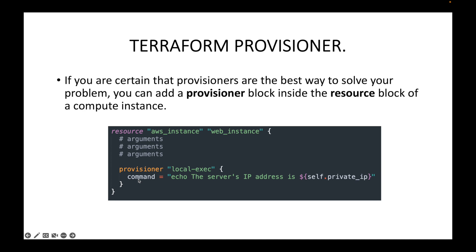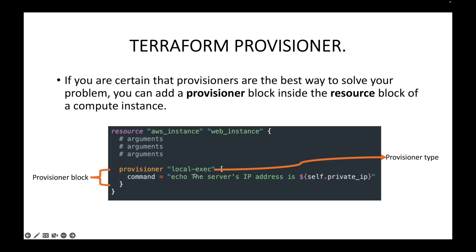This becomes your provisioner block, and here is the provisioner type. In the last session we discussed the types of provisioner blocks: we have local-exec, remote-exec, and the file provisioner. In this case I'm using local-exec as the provisioner type, and then here is the command that I want to execute using this local-exec. This is how we declare a provisioner block within a resource block.